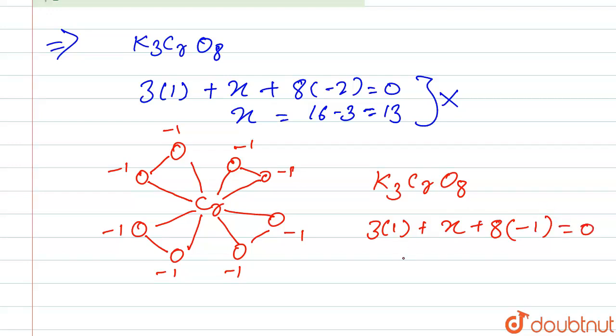So x is equal to +5 oxidation. So chromium has +5 oxidation state. So this is our option second.